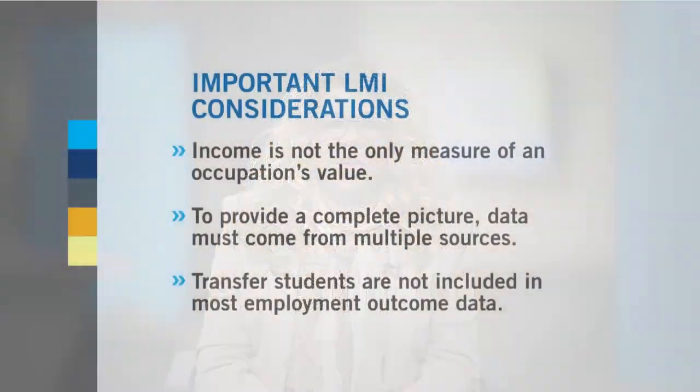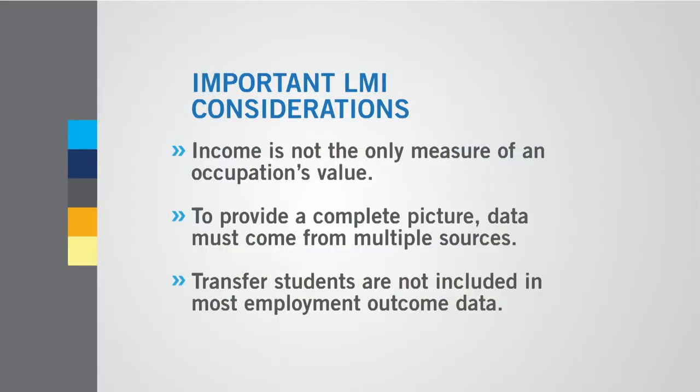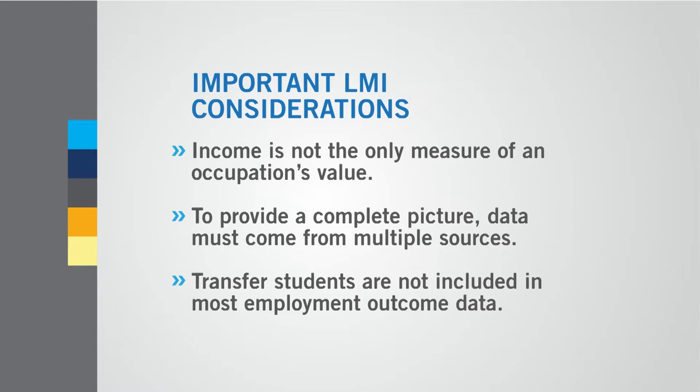There are some points to highlight when talking about using labor market information. First, it's important to note that the amount of money paid in an occupational area is not the only measure of value. There are occupations such as child development that offer low wages but are vital to society. Second, we need to combine multiple data sources and approaches to LMI issues. Each source offers a piece of the puzzle but is not complete in and of itself. Finally, be aware that transfer students are not included in most employment outcome data. Excluding that group from the data is necessary to get a clear understanding of the impact community college programs have on employment.